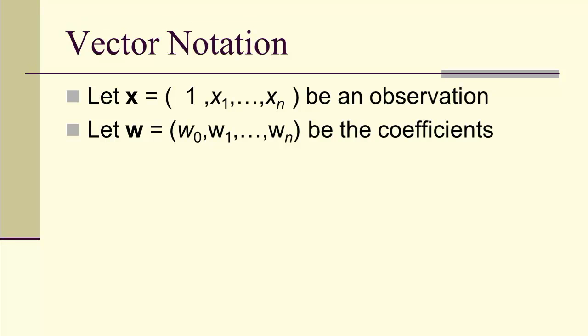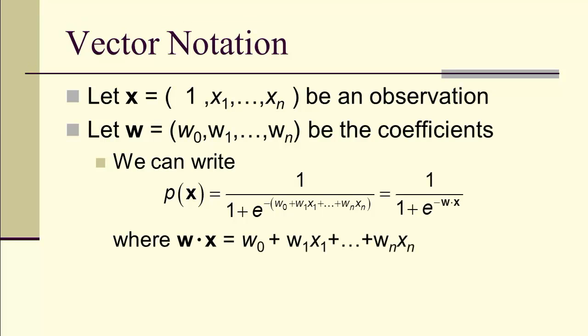Notice that our vector x, we're going to start with the number 1, so that multiplying 1 times w_0 gives us w_0. Our observations are vectors bold x, and w is the coefficients. That means we can write our probability function as 1 over 1 plus e to the negative w dot x, where w dot x is an inner product.